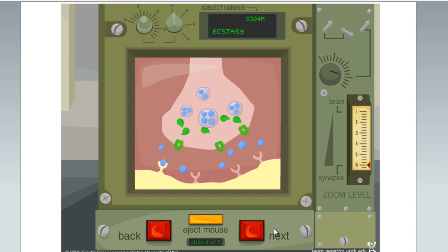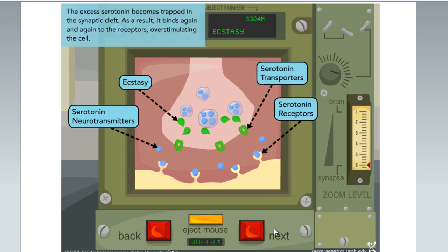The excess serotonin becomes trapped in the synaptic cleft. As a result, it binds again and again to the receptors, overstimulating the cell.